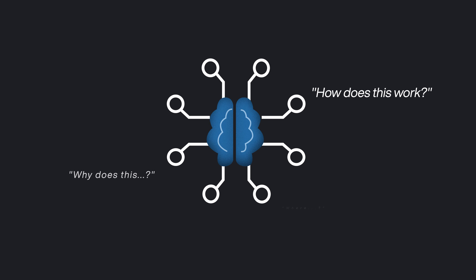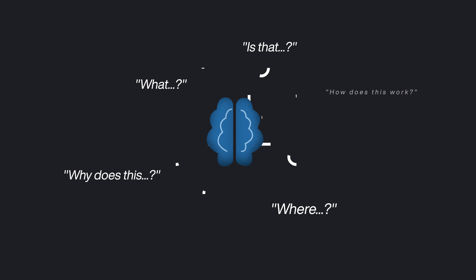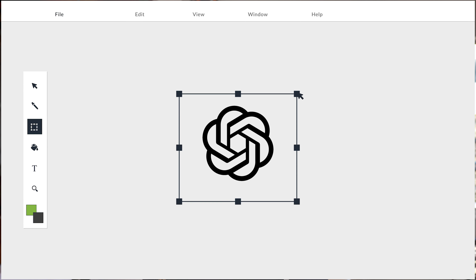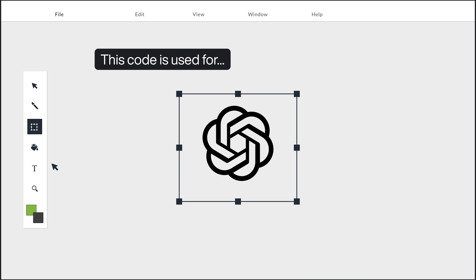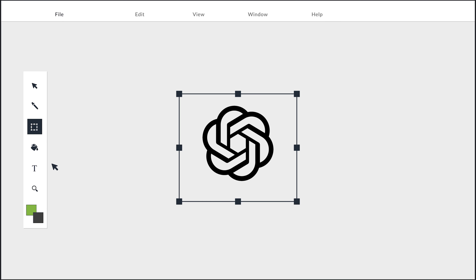It is trained to pick up on specific words and phrases mentioned in user queries and use them to gain better context in the conversation. You'll need to simply type in the query, explain this code, and copy and paste the code you're trying to understand. ChatGPT will tell you what the code is used for and what functions it uses to produce the desired result.